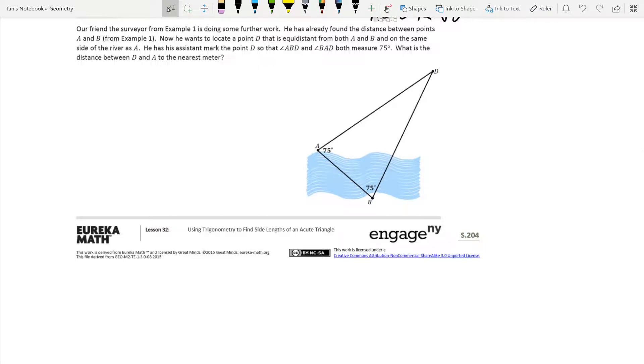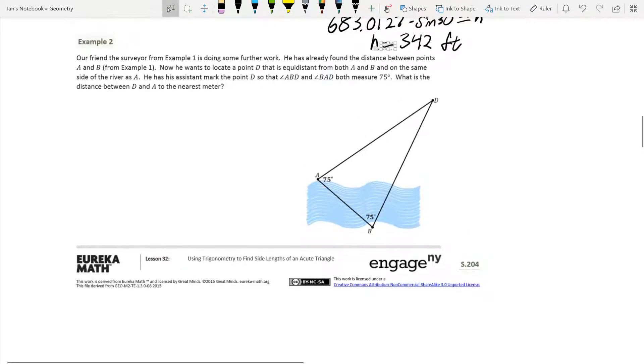Alright guys, so picking up where we left off in example 2, our friend the surveyor from example 1 is doing some further work. He's already found the distance between points A and B. Now he wants to locate point D that is equidistant from both A and B. So what he wants to do is find an isosceles triangle across the river. On the same side of the river at A, he has his assistant mark point D, so that angle ABD and angle BAD both measure 75 degrees.